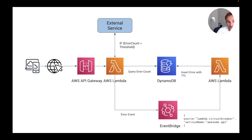The cool thing about this design is that after the TTL expires, the item is removed from DynamoDB and the next Lambda call will try again to call the external service. So basically, if a service is not replying, we give it 60 seconds and then try again. You can play with this logic based on the needs of your application.